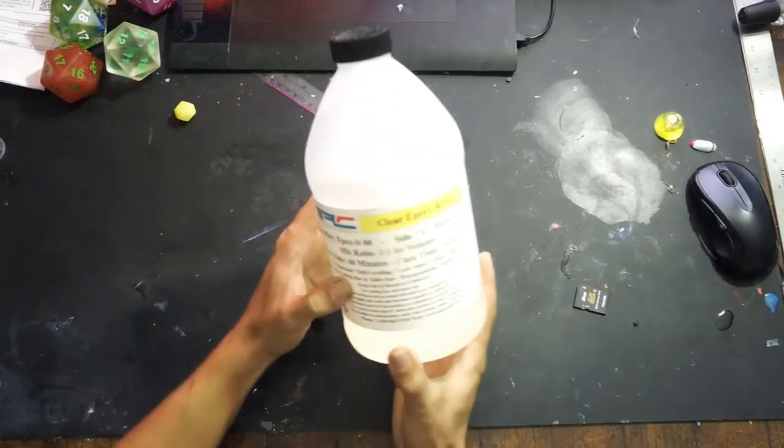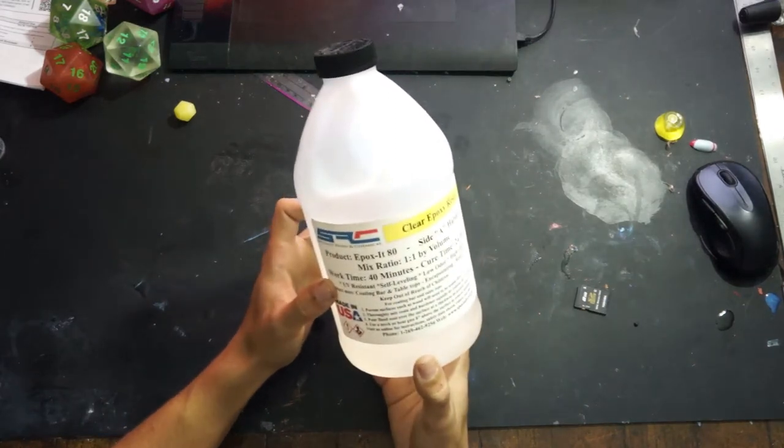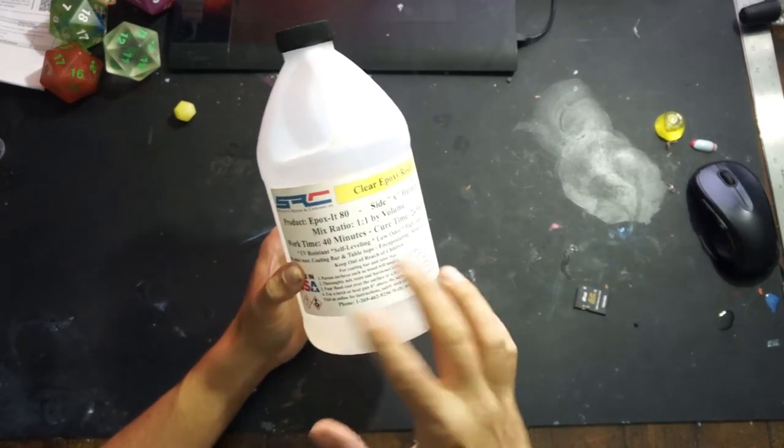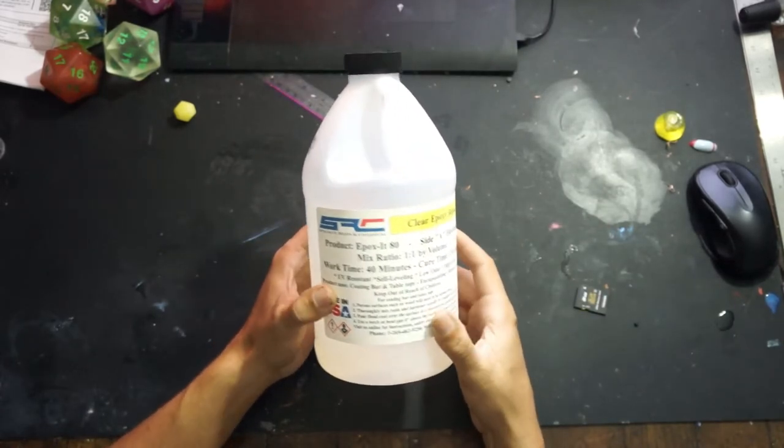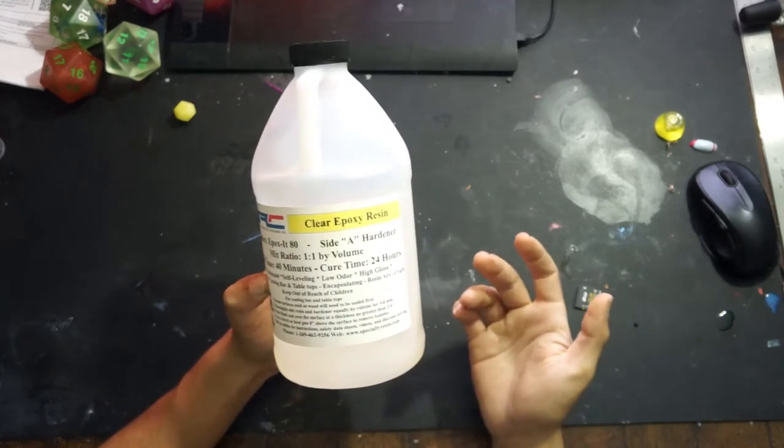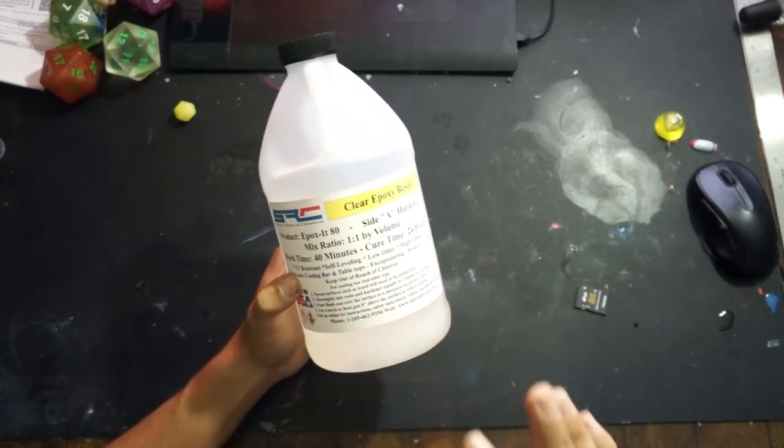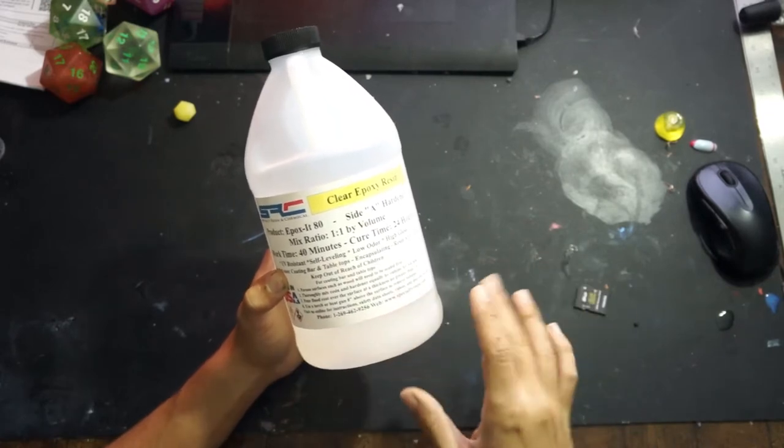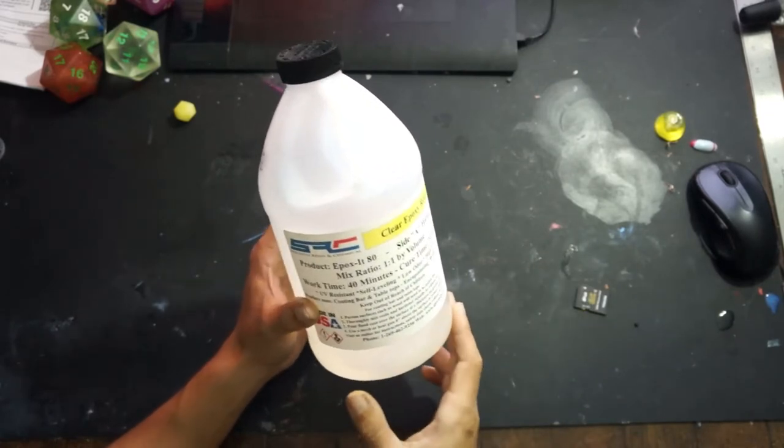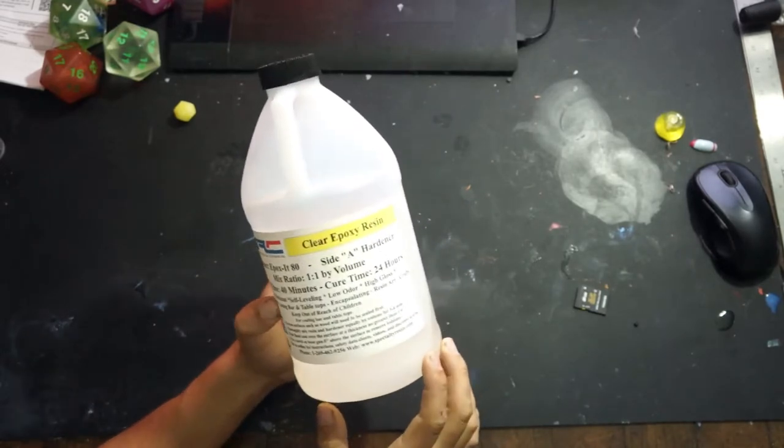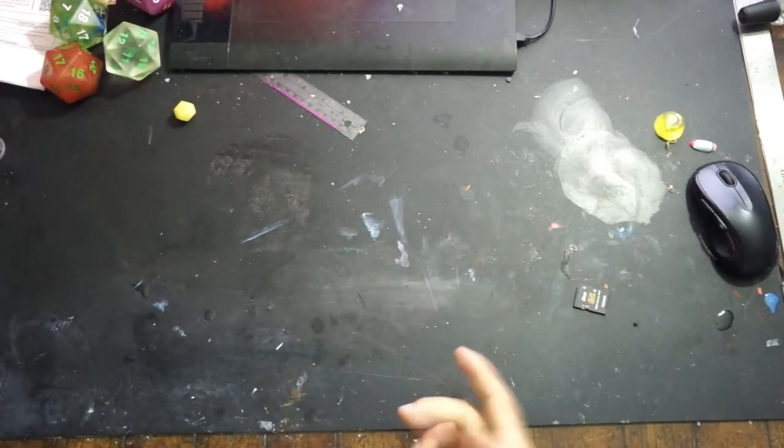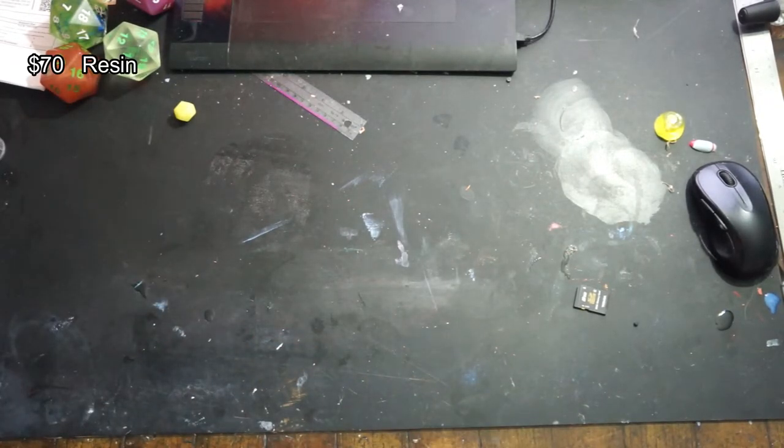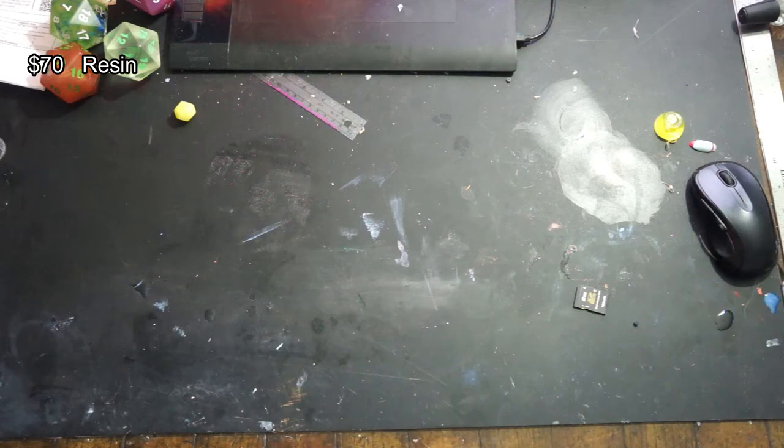So the first thing you're going to need is resin, obviously. And there's a whole bunch of stuff about what kind of resin you're supposed to use depending on what project you're working on. This is SRC tabletop resin. So this is not made for deep pour casting, it's meant for flood coats, but I use it for casting anyway. It seems to work okay. I have some bubble issues every once in a while, but it works. And that was 70 bucks for one gallon - a half gallon of the resin and a half gallon of the hardener.